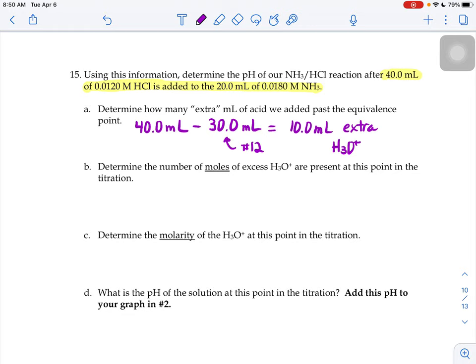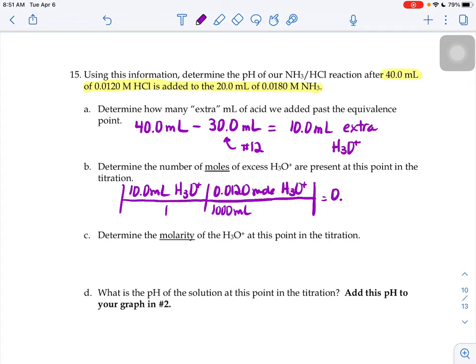If we want to know the moles of the H3O plus we know its molarity, it told us molarity up here, and we know the volume so we could figure out how many moles of extra H3O plus we put in there. So if we have 10 extra milliliters of H3O plus, for every 1000 milliliters we would have 0.0120 moles of that H3O plus, and so we're going to have 0.000120 moles of H3O plus extra in our flask.